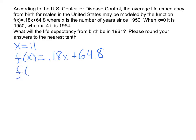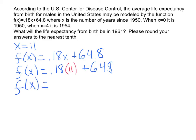Now I'm going to plug in the value. So F of X equals 0.18, and this time instead of writing X, I'm going to write what X equals — so that will be 11 — plus 64.8. Then we go 0.18 times 11, which gives us 1.98 plus 64.8.